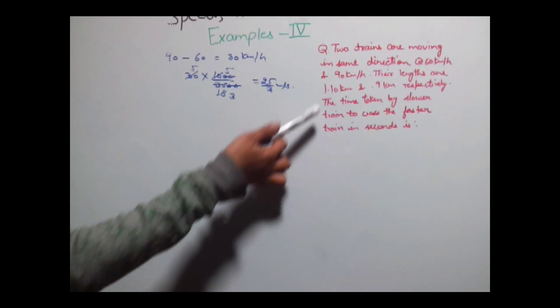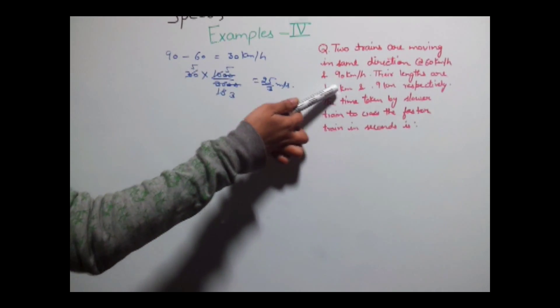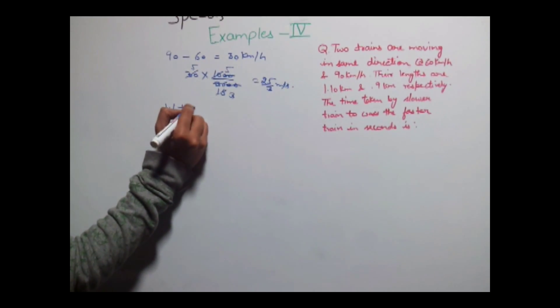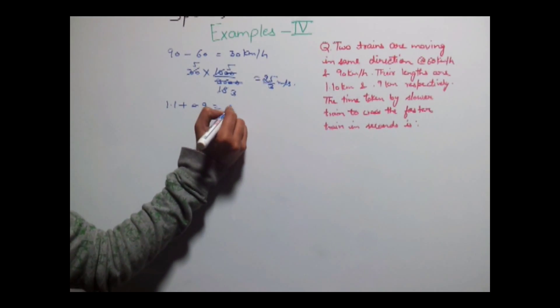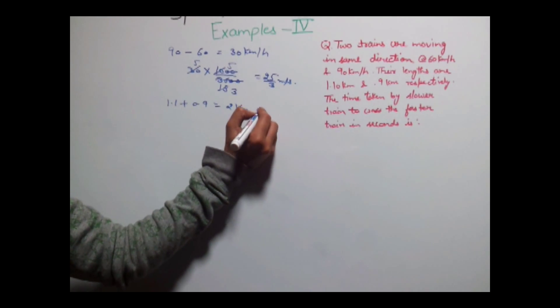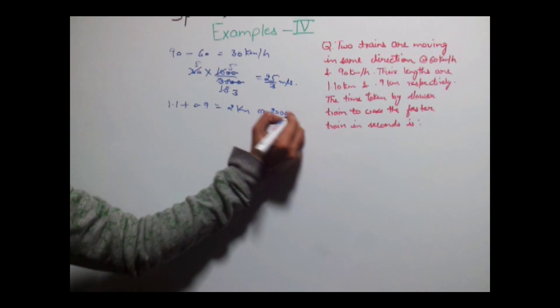Similarly total distance of the trains would be 1.1 plus 0.9, that is 2 km or 2000 meters.